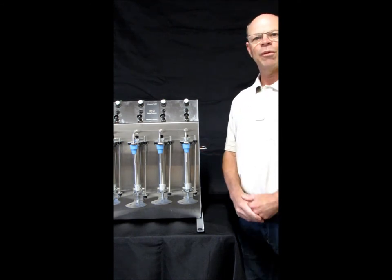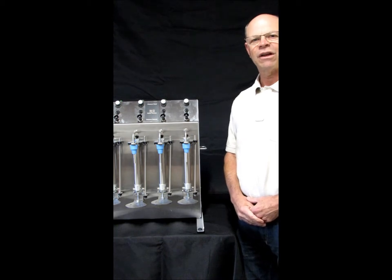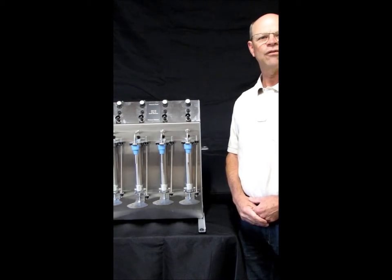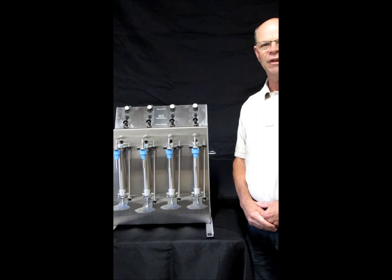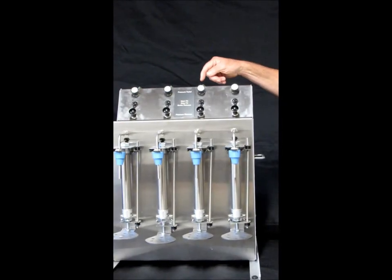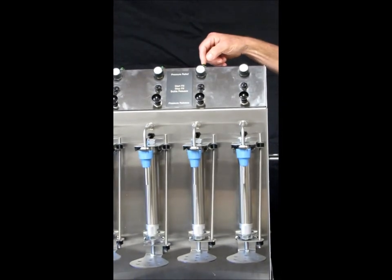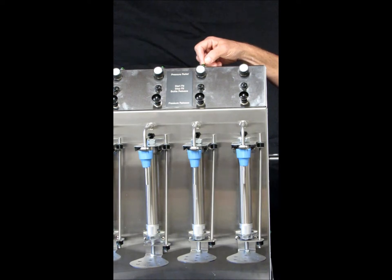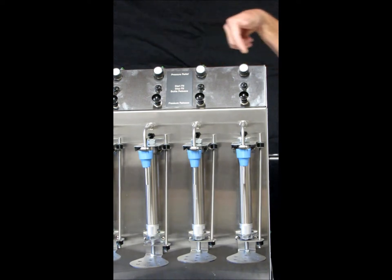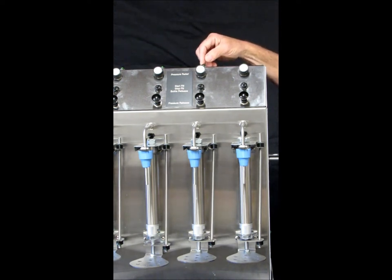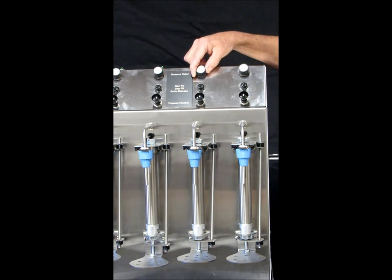Before we get into the operation of the filler, I want to give you a quick tour of some of the features and key components. Over here, we have a green LED light. There's one for each of the fill spouts. This light will be green during the filling process. Just down from there, there is a pressure relief valve, again for each spout.